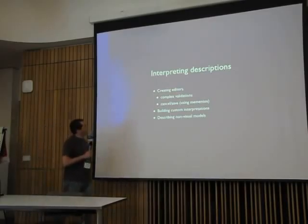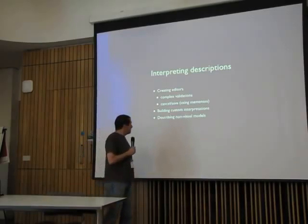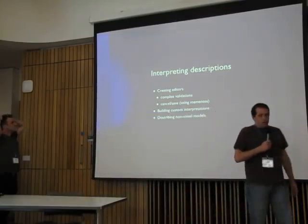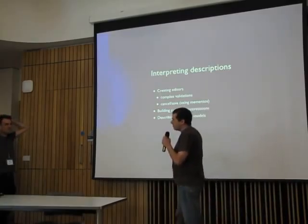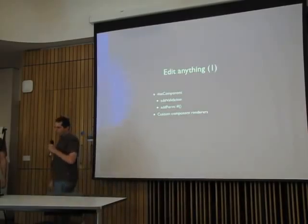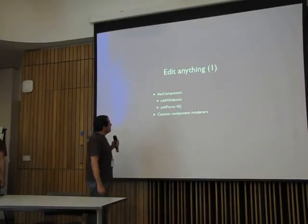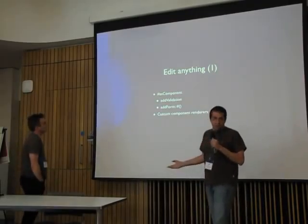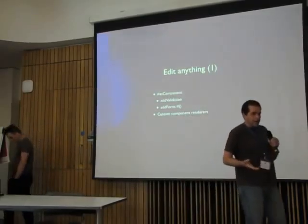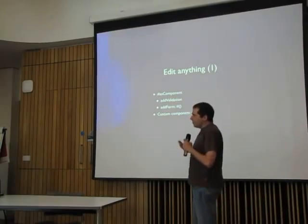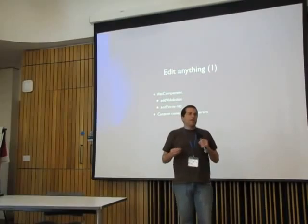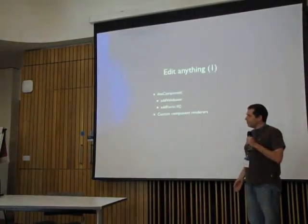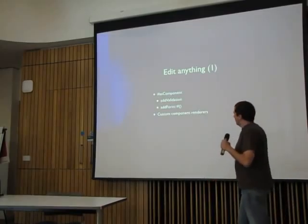With that model, we are going to create some editors and do some complex validations, show you how to build some custom interpretation, and show you how we use it to describe non-visual models. To edit components in Magritte, we are going to use Magritte's Seaside, which is just one possible interpreter for Magritte, but it's the most common one. One of the biggest problems with Magritte is that everybody believes it's for rendering components with Seaside — and it's not at all.